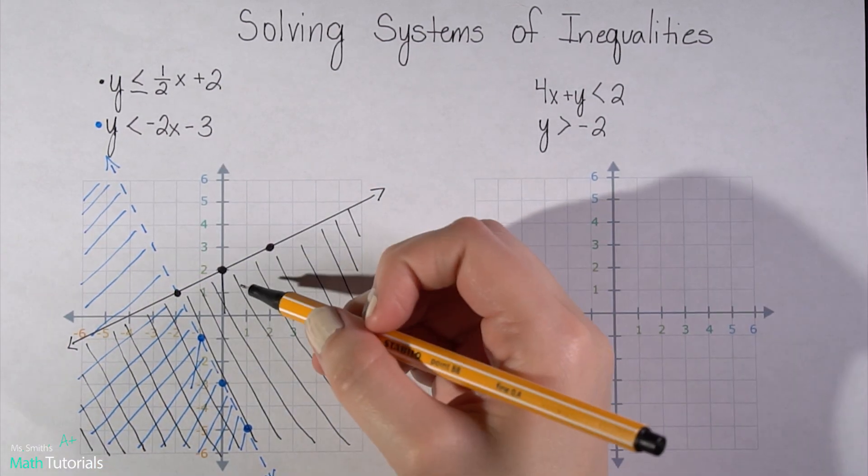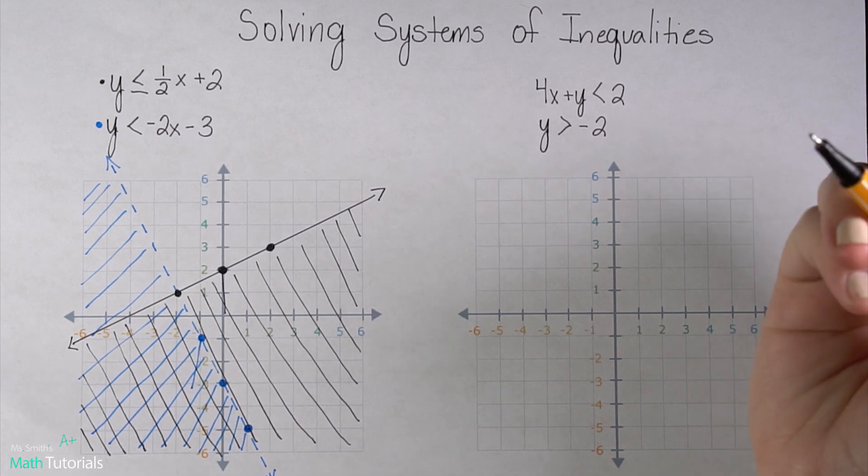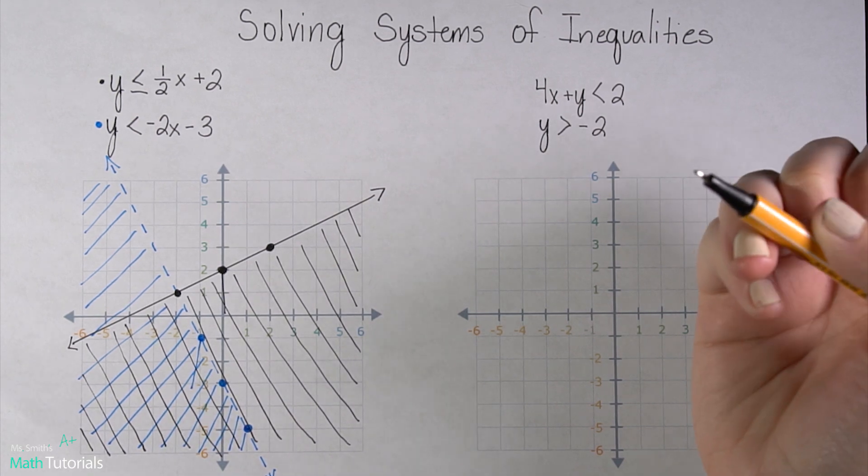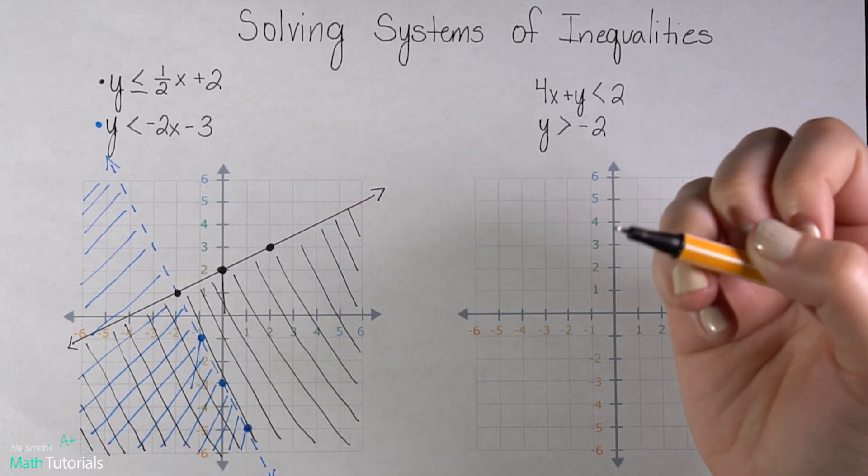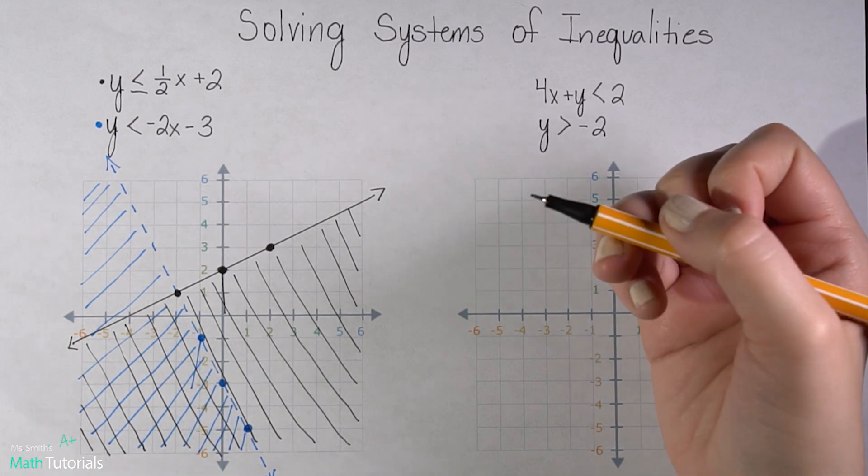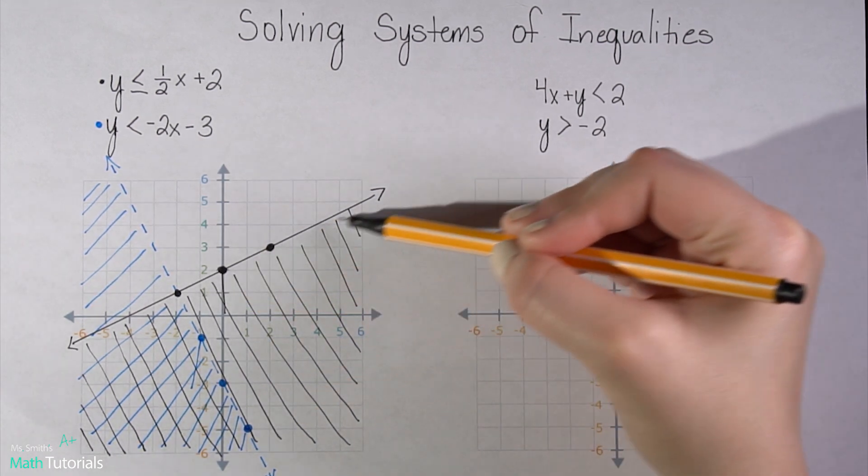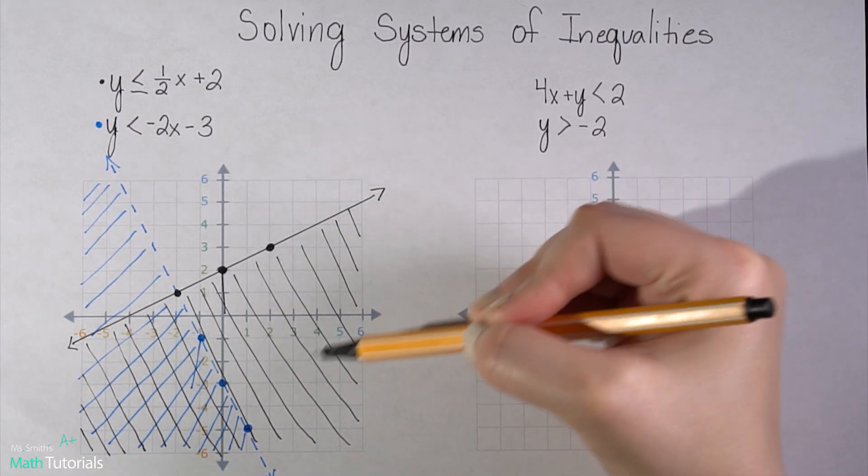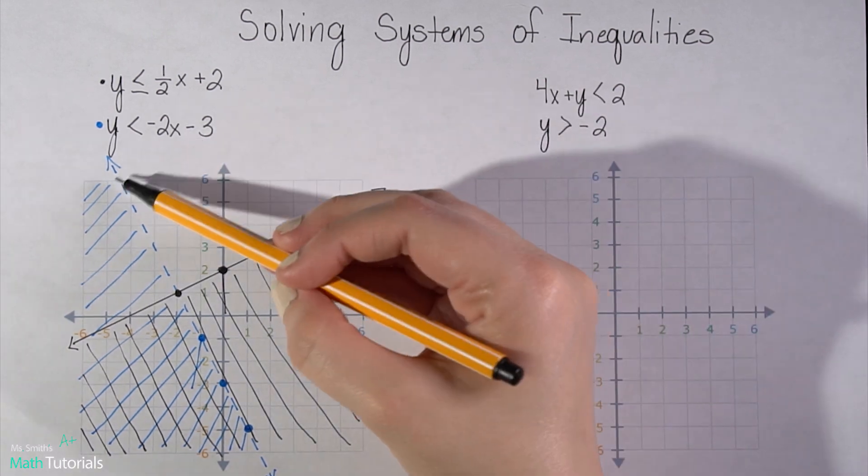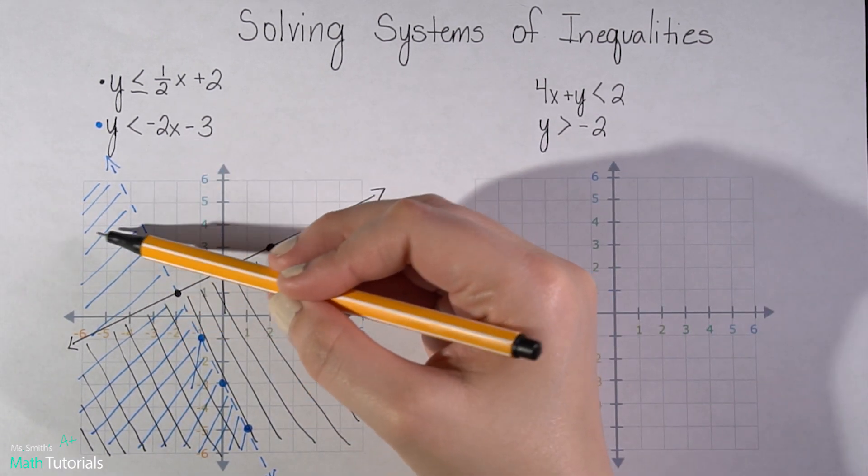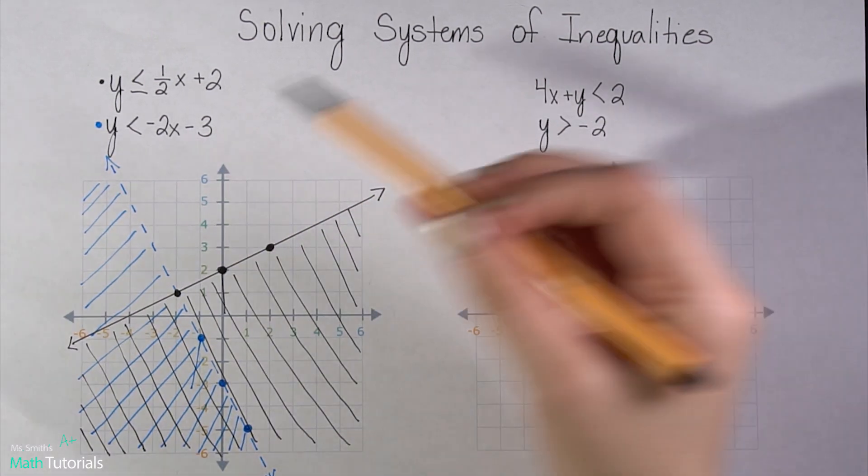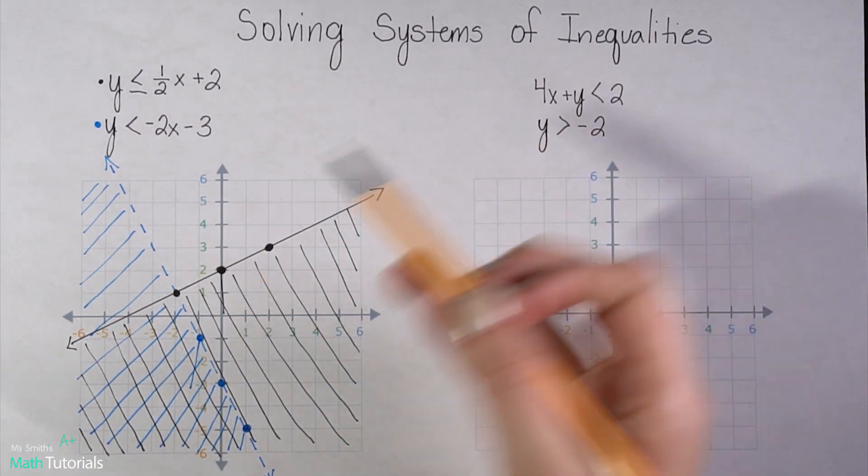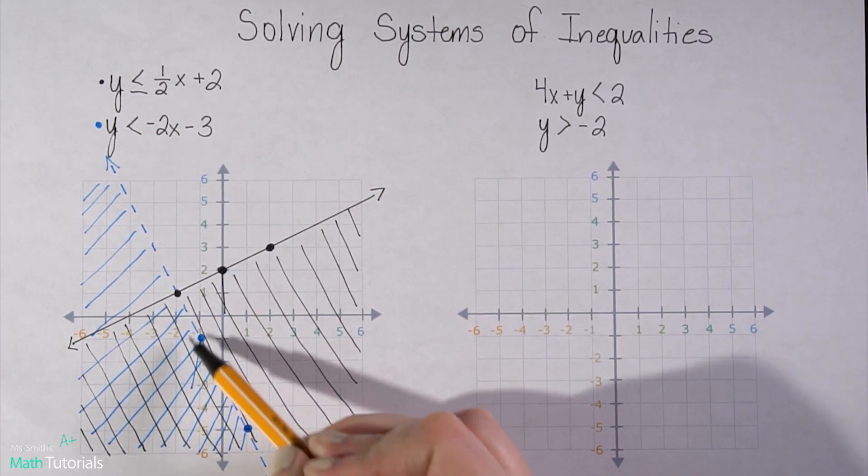So looking at this, at what I've created here with this graph, I'm looking for whatever overlaps. So I'll notice this area right here is only shaded in black. This area up here is only shaded in blue. This area is not shaded at all. But this corner area right here, it's shaded in black and blue.